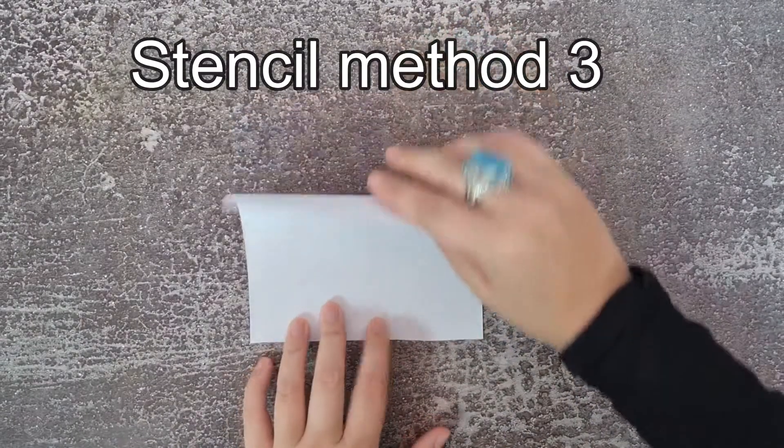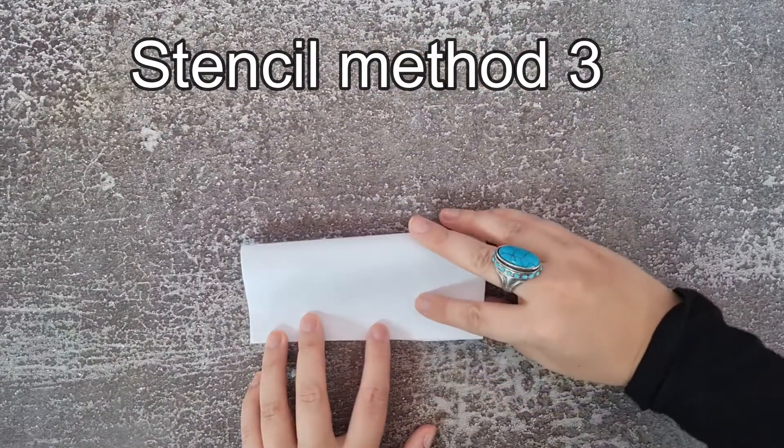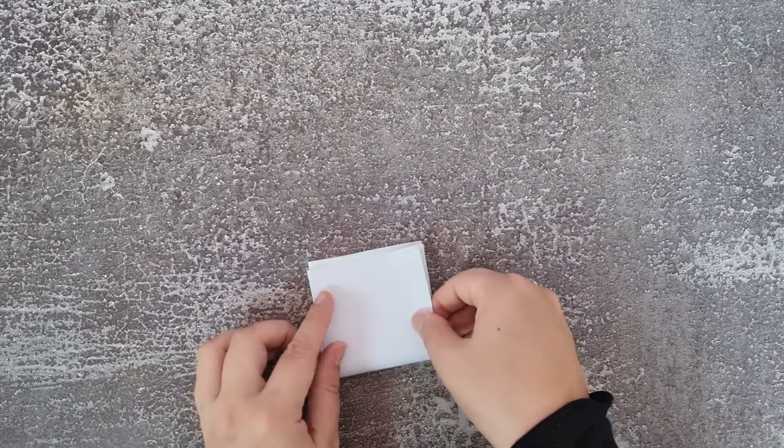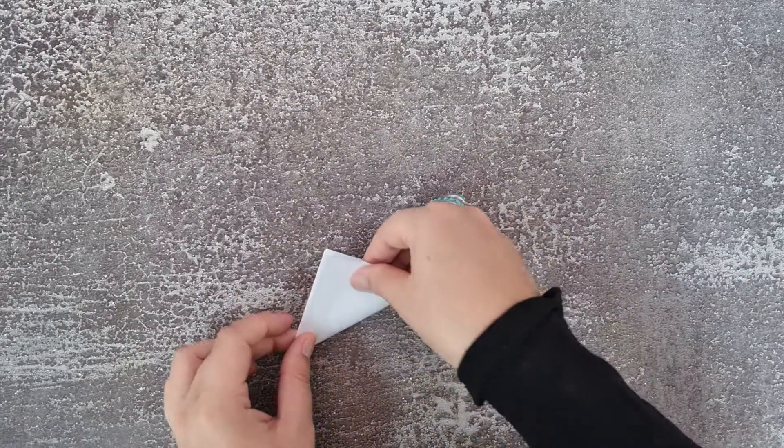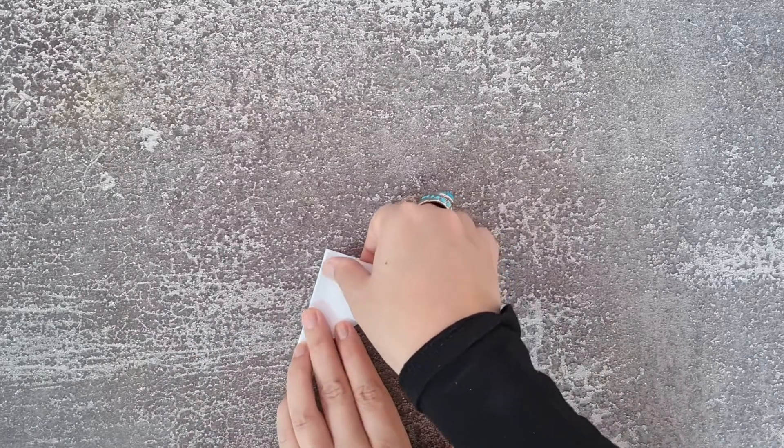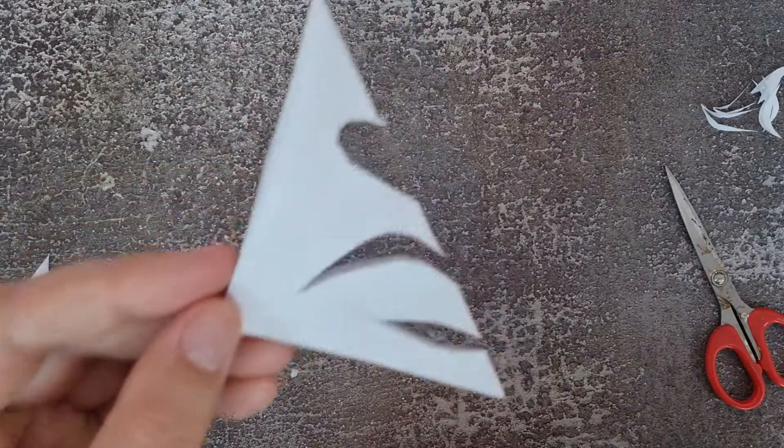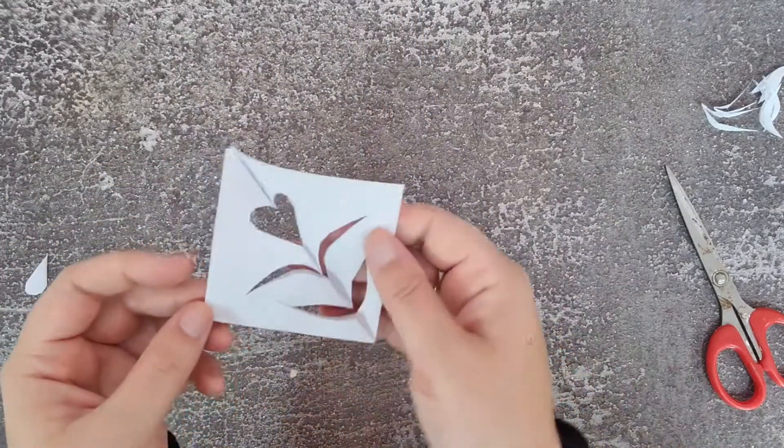Stencil method three is similar to method two where we fold the square down to a smaller square. However, this time we fold the small square in half to make a triangle. Then we cut out the shapes along the folded line and open out to reveal the stencil.